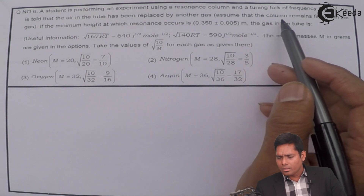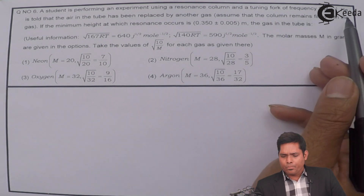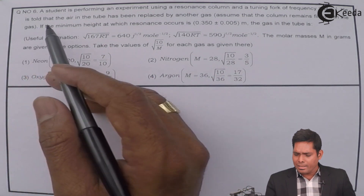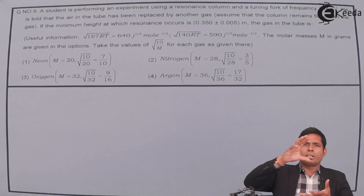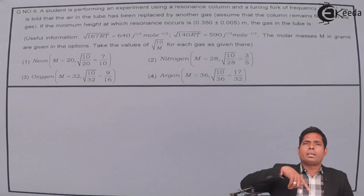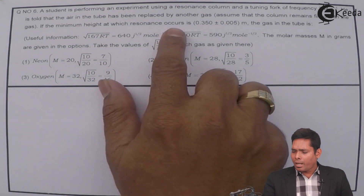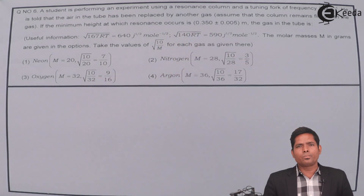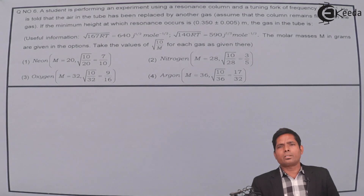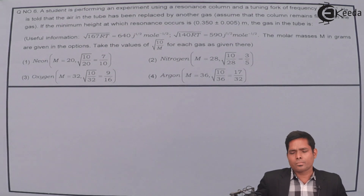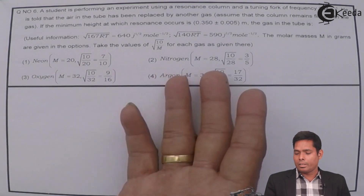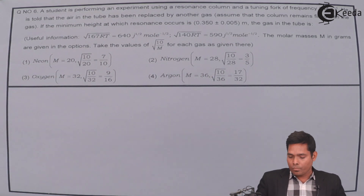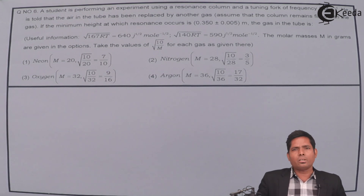Assume that the column remains filled with gas. The air is replaced by gas, and if the minimum height at which resonance occurs with the gas and the vibrating tuning fork is 0.350 ± 0.005 meters, which of the following is the gas present in the tube? The options are neon, nitrogen, oxygen, or argon.